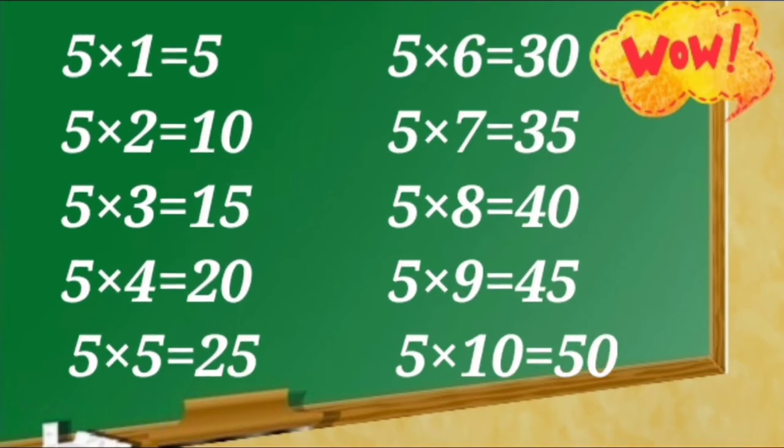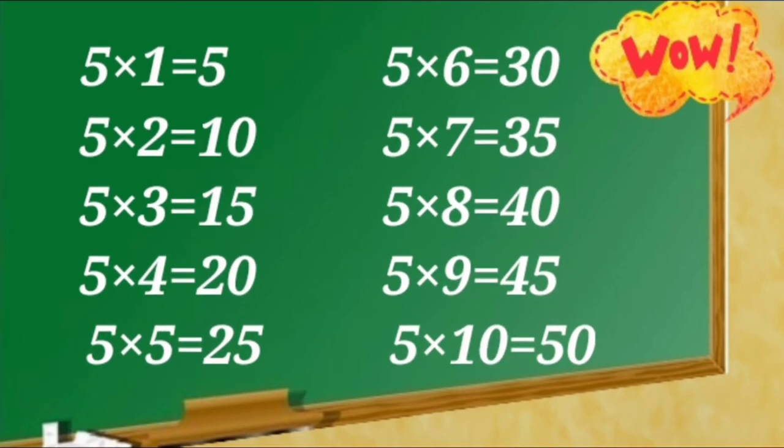5 ones are 5, 5 twos are 10, 5 threes are 15, 5 fours are 20, 5 fives are 25, 5 sixes are 30, 5 sevens are 35, 5 eights are 40, 5 nines are 45, 5 tens are 50.